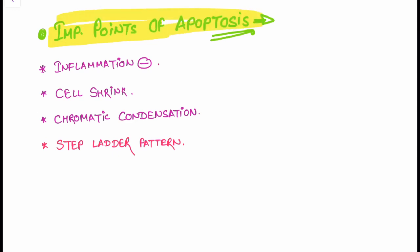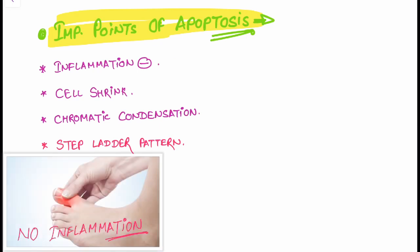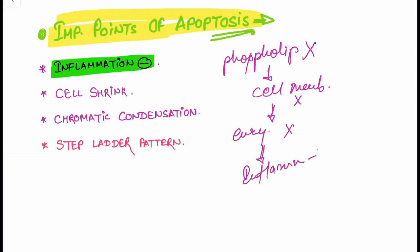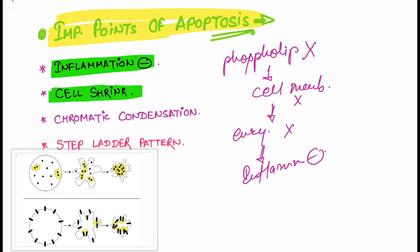Some important points about apoptosis: cell death occurs due to activation of protease and endonuclease enzymes, which destroy proteins and nucleic acids respectively. There is no inflammation present in apoptosis because there is no activation of phospholipase, so the cell membrane is not damaged, enzymes do not come out of the cell, and therefore inflammation is absent.